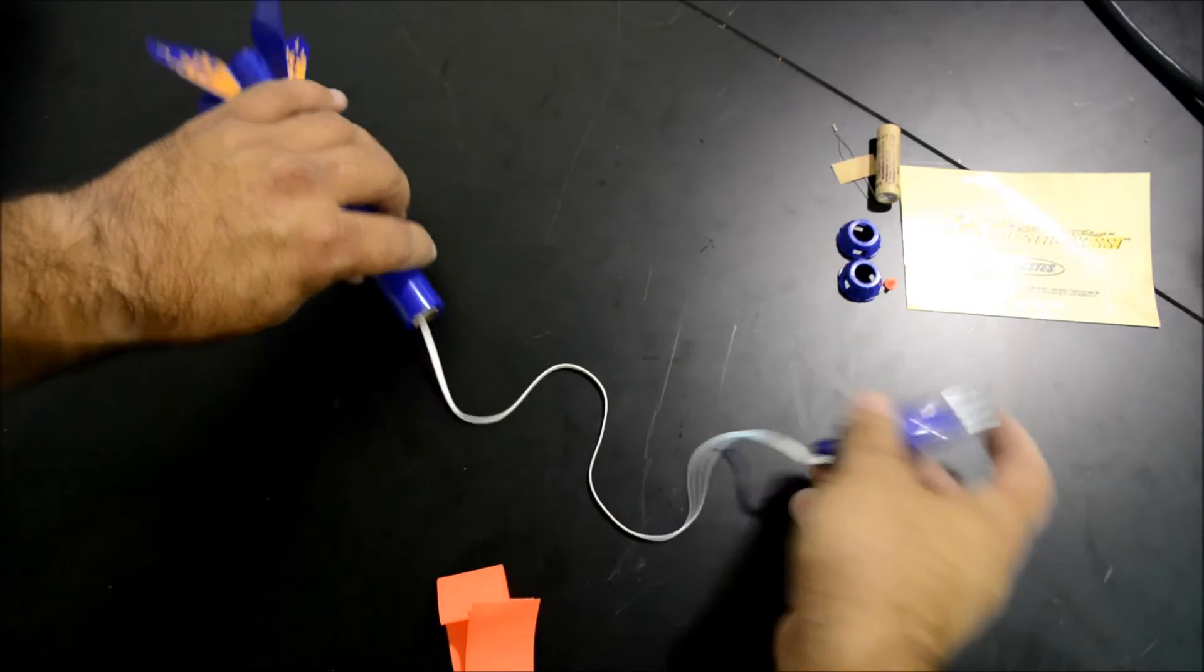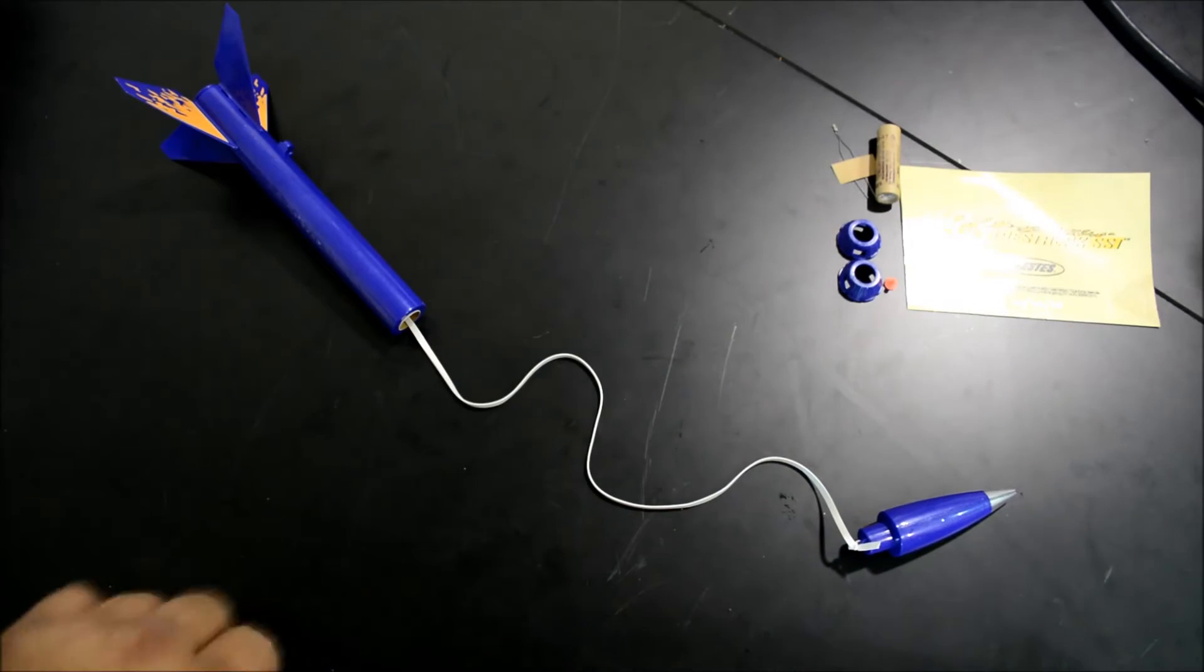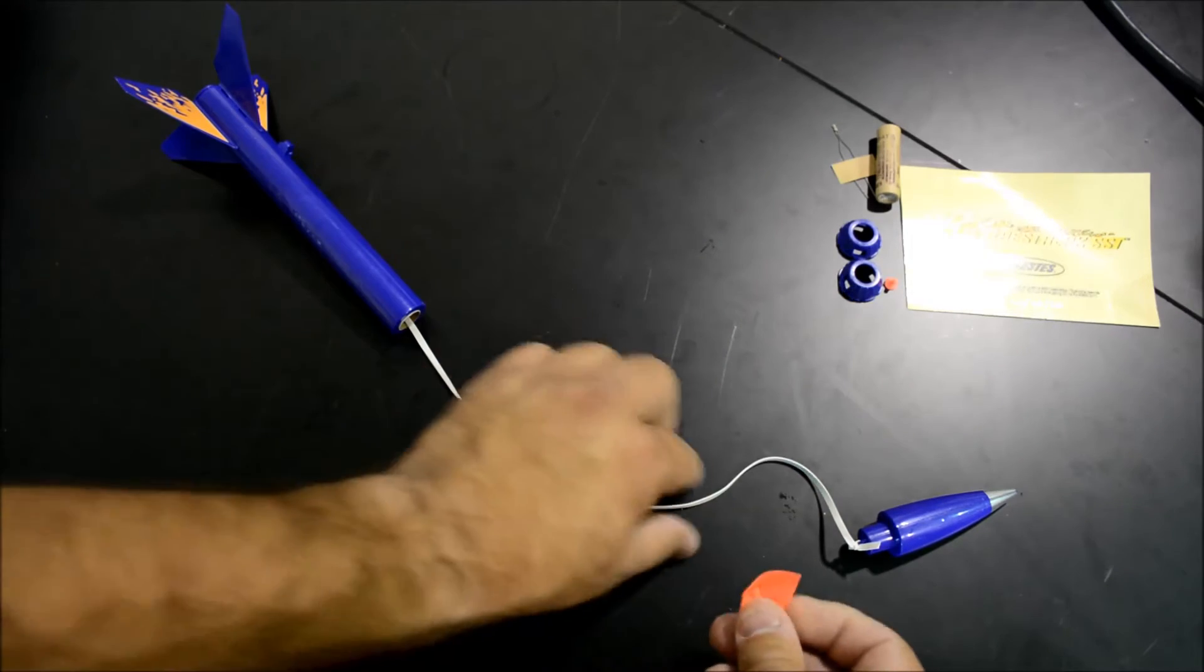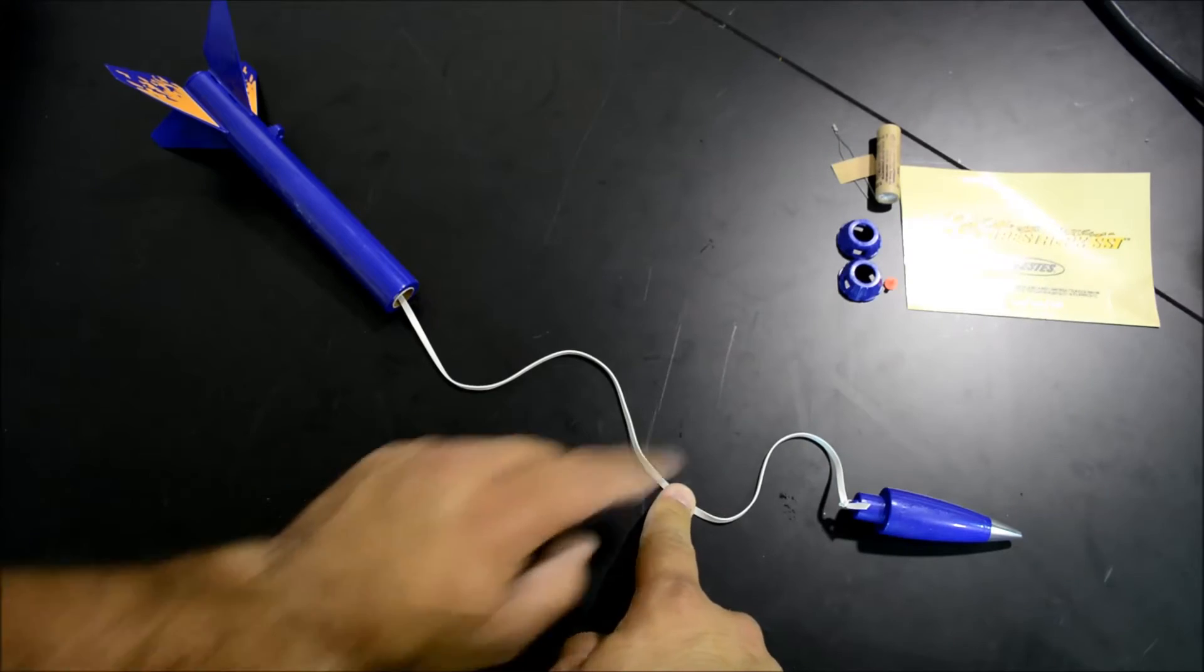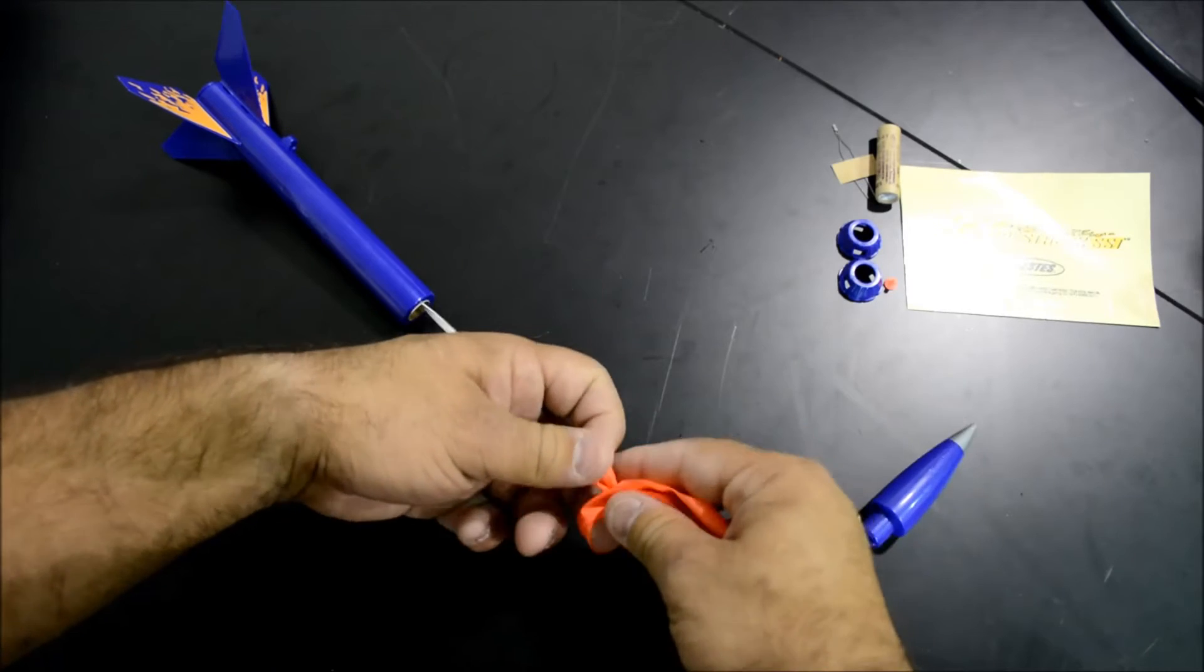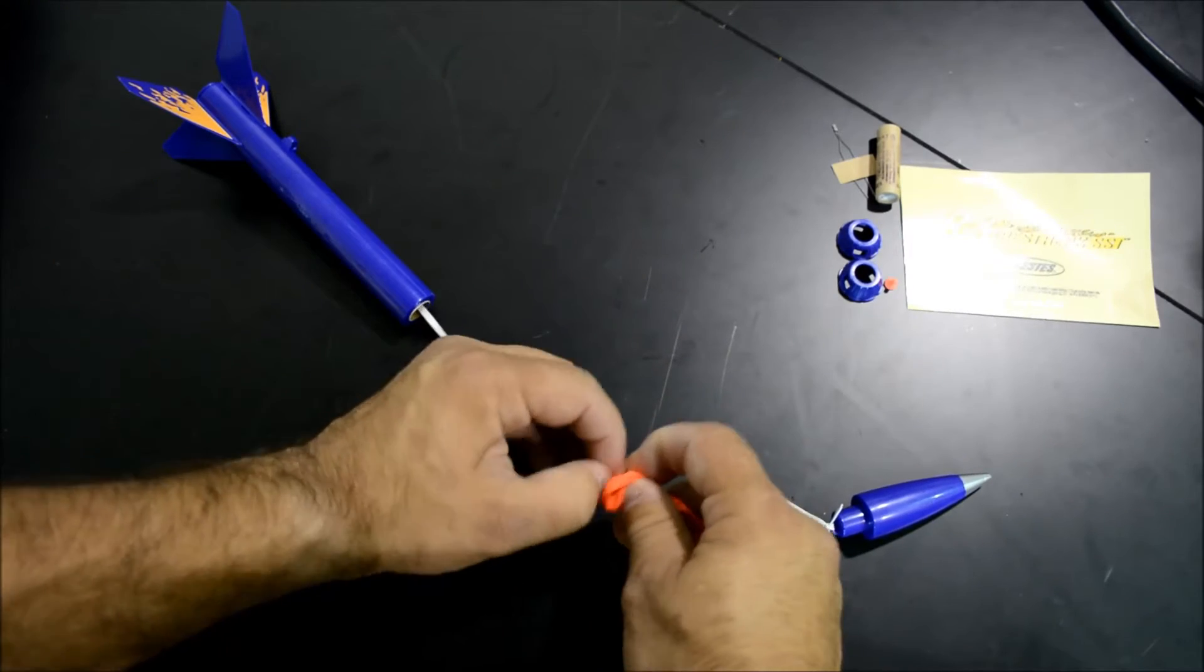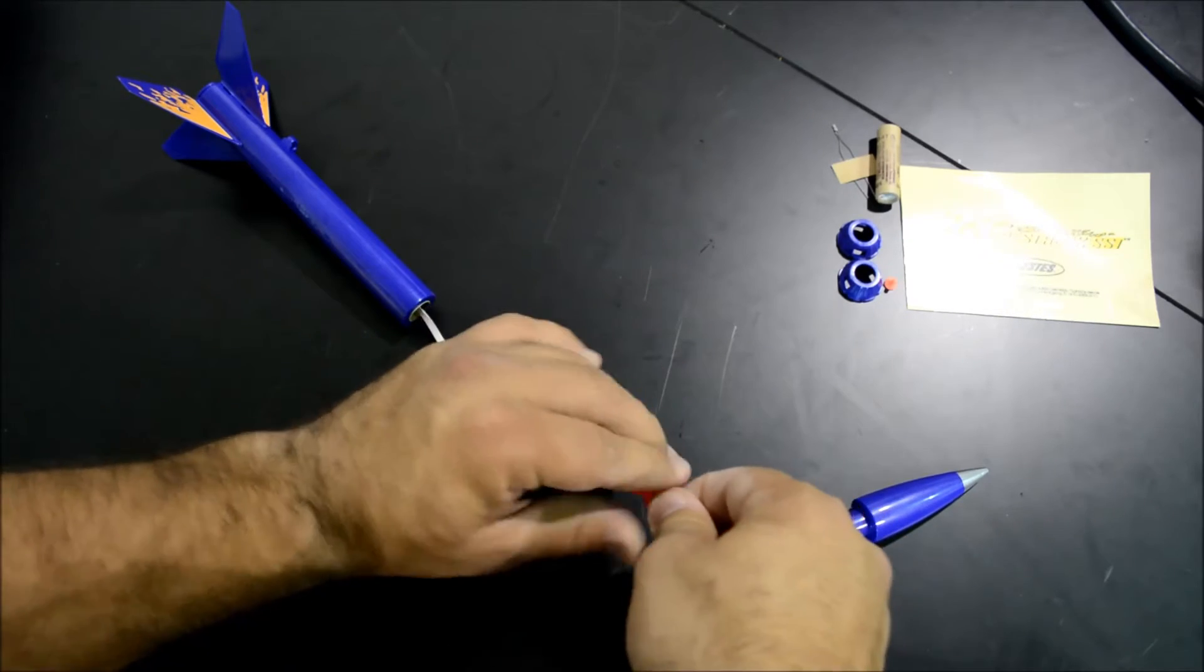We're almost done with assembly and are almost ready to load the motor, but first we're going to attach our streamer. To attach the streamer, come about one-third of the way down the shock cord from the nose cone, and just tie the streamer onto the shock cord. Just like that.